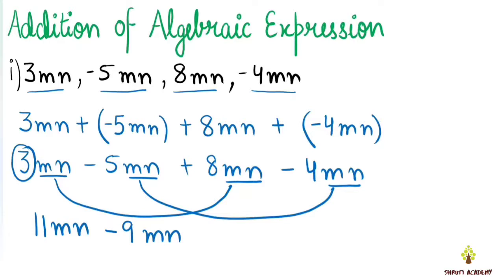Plus minus means minus, so we do 11 minus 9, which is 2. The sign belongs to the greater number, which is 11 with plus. So our answer is plus 2mn. That is how we add algebraic expressions.